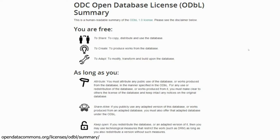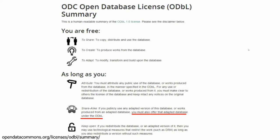The license under which OpenStreetMap operates means we're free to share, create, and adapt the data, but there are obligations. You have to attribute the data correctly — if you're using OpenStreetMap data you need to attribute it properly. You also need to share alike, meaning if you adapt the OpenStreetMap data, make changes and additions, you're obliged to share that back out under the same terms.